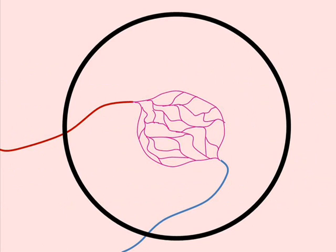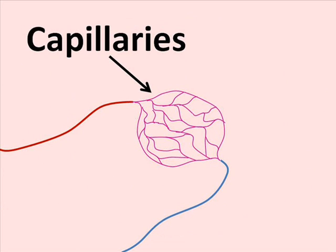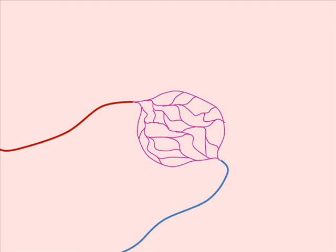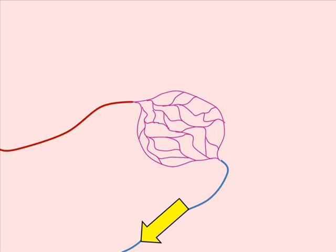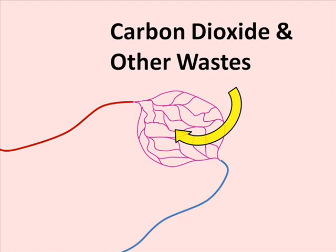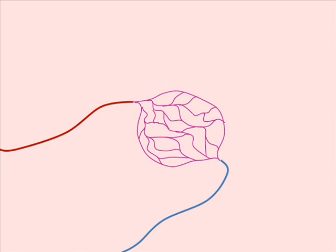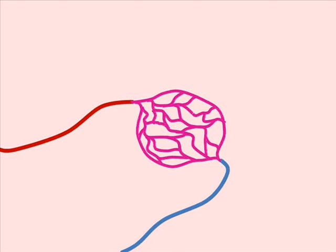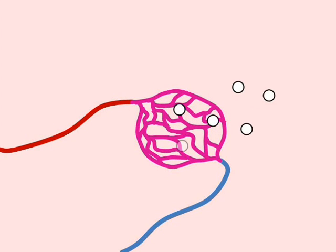This migration of cells from the bloodstream to the wound begins at the capillaries — the tiny vessels that connect the very small arteries to the very small veins. As blood passes through the capillaries, oxygen and nutrients are delivered to the tissue, and carbon dioxide and other waste products are absorbed and carried away. The migration of white blood cells is made possible by the dilation and increased permeability of these capillaries, which allows circulating white blood cells to slip through the vessel wall and make their way to the wound.